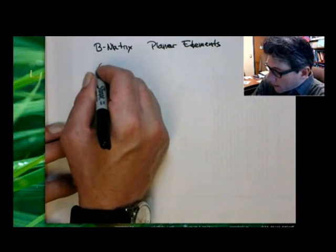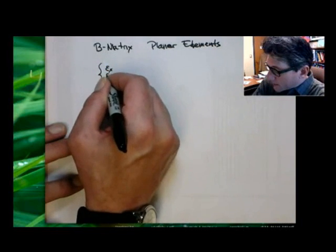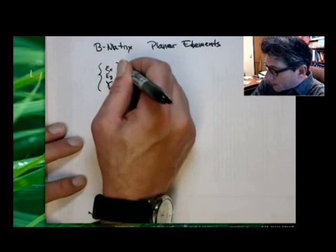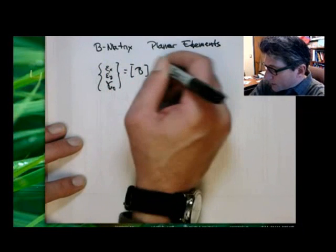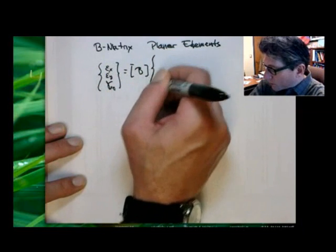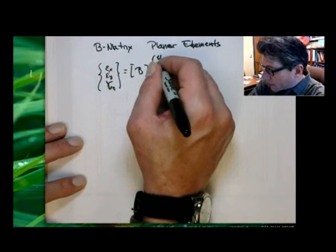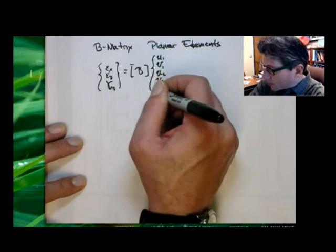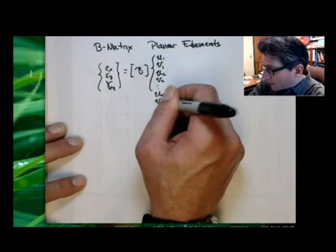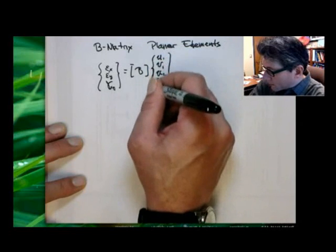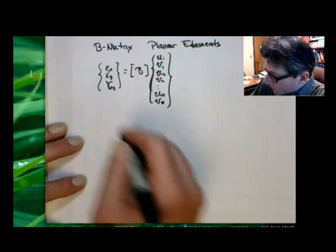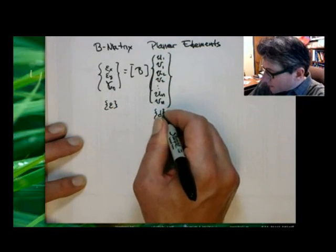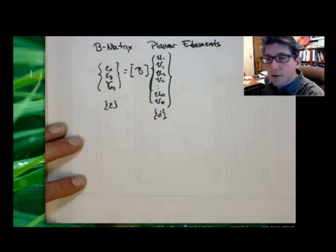These are elements that are going to have the following relationship. We want to get the strain in X, the strain in Y, and the shear strain in the XY plane, related through this B matrix to the nodal displacements, which are going to be U1, V1, U2, V2, ..., UN, VN. This is my strain vector and these are my nodal displacement unknowns for the element.